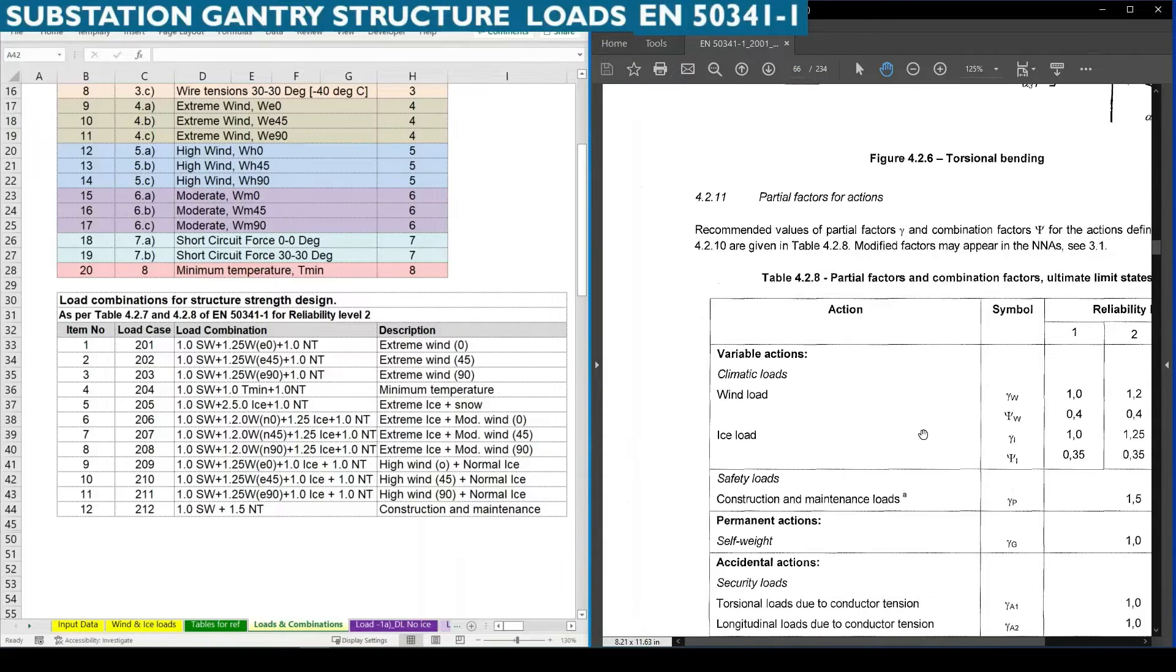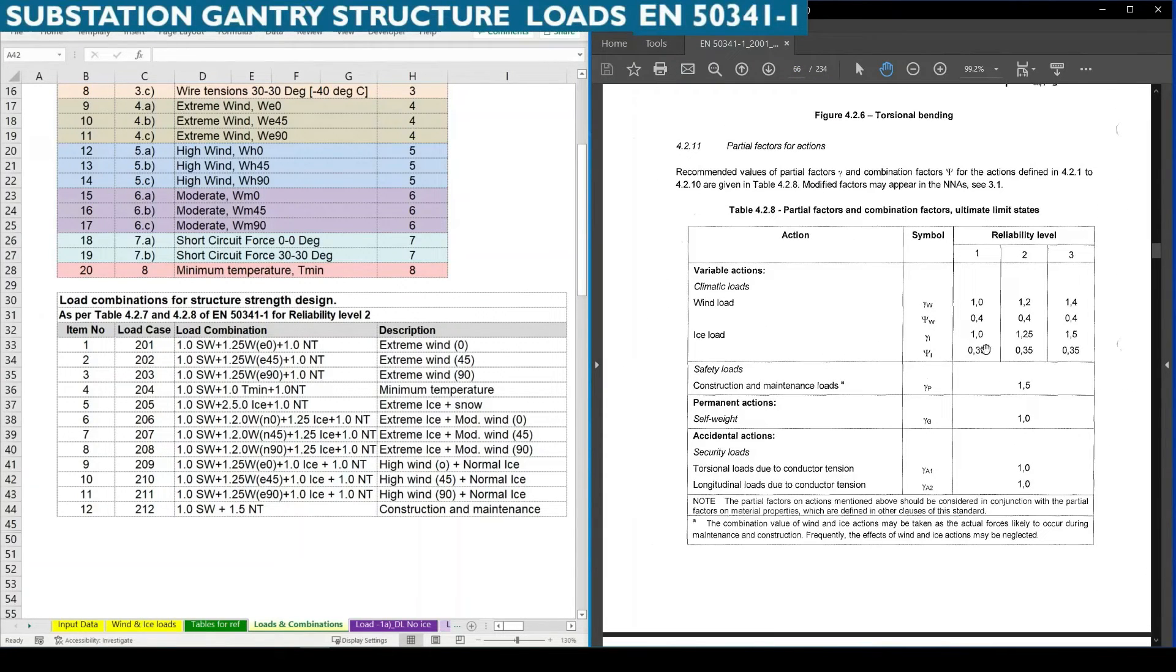For 66 you can find here various partial factors based upon the wind ice load combinations, safety loads and construction maintenance loads, sulphate, security loads.